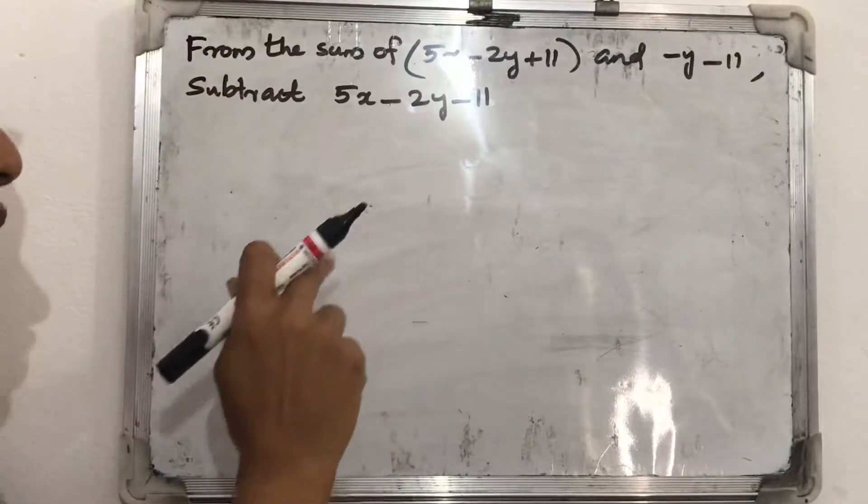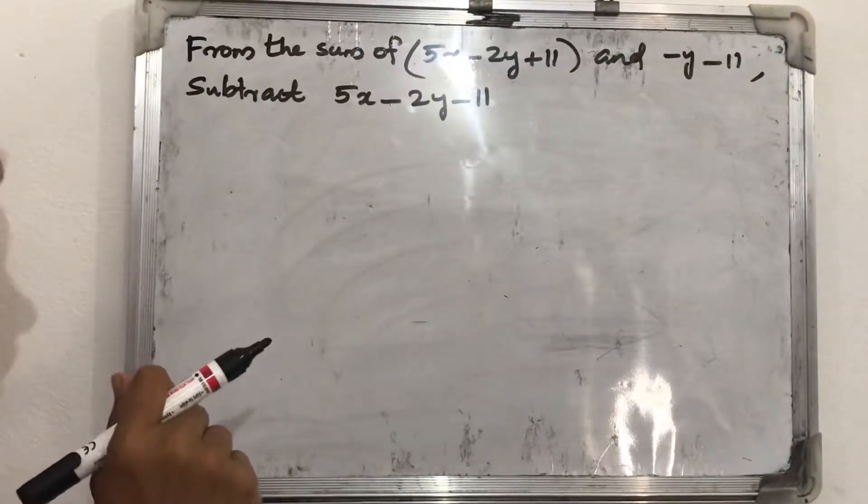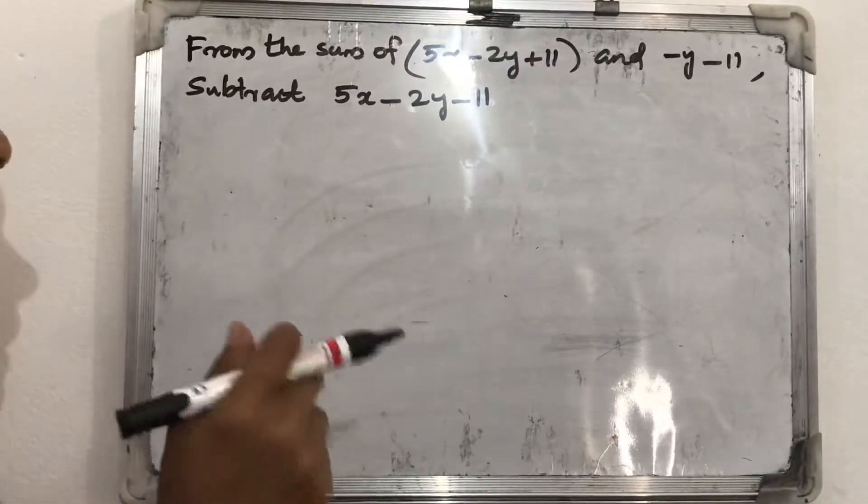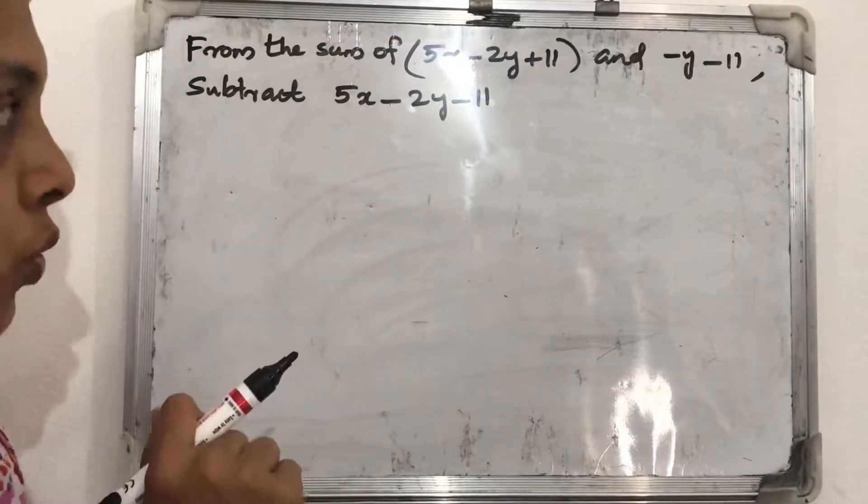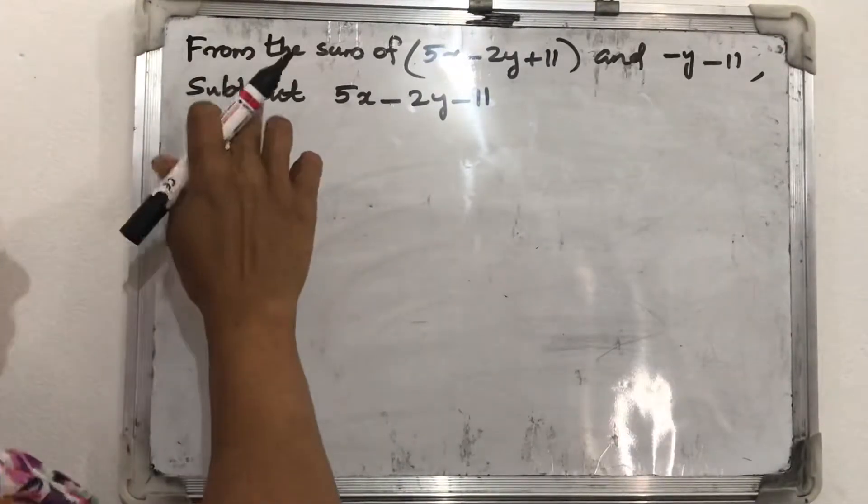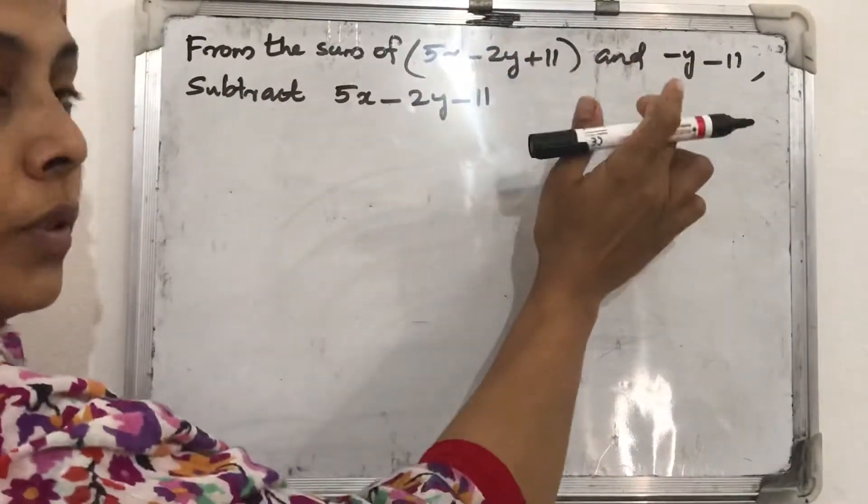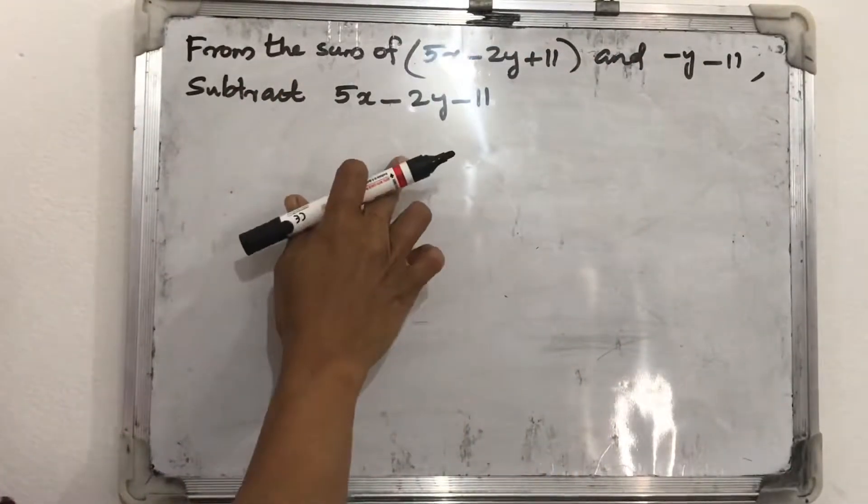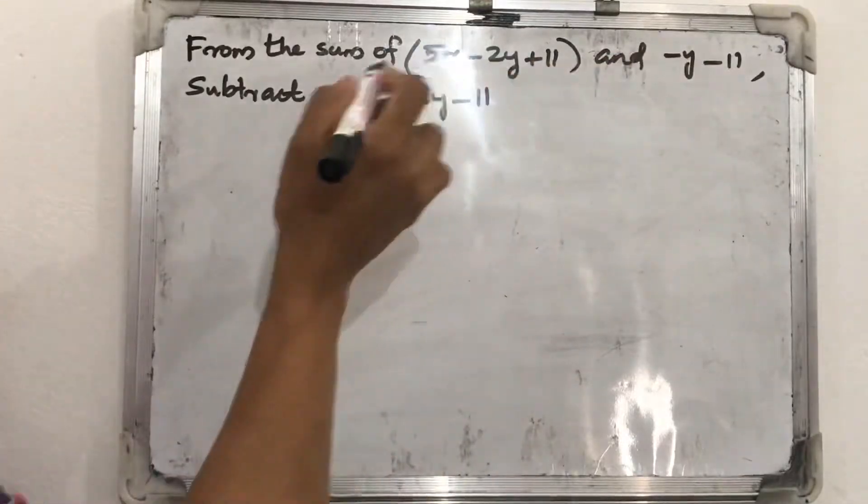From the sum of 5x minus 2y plus 11 and minus y minus 11, subtract 5x minus 2y minus 11. So read the question now. From the sum of these two, we want to subtract this one. So first we can find out the sum of those two.